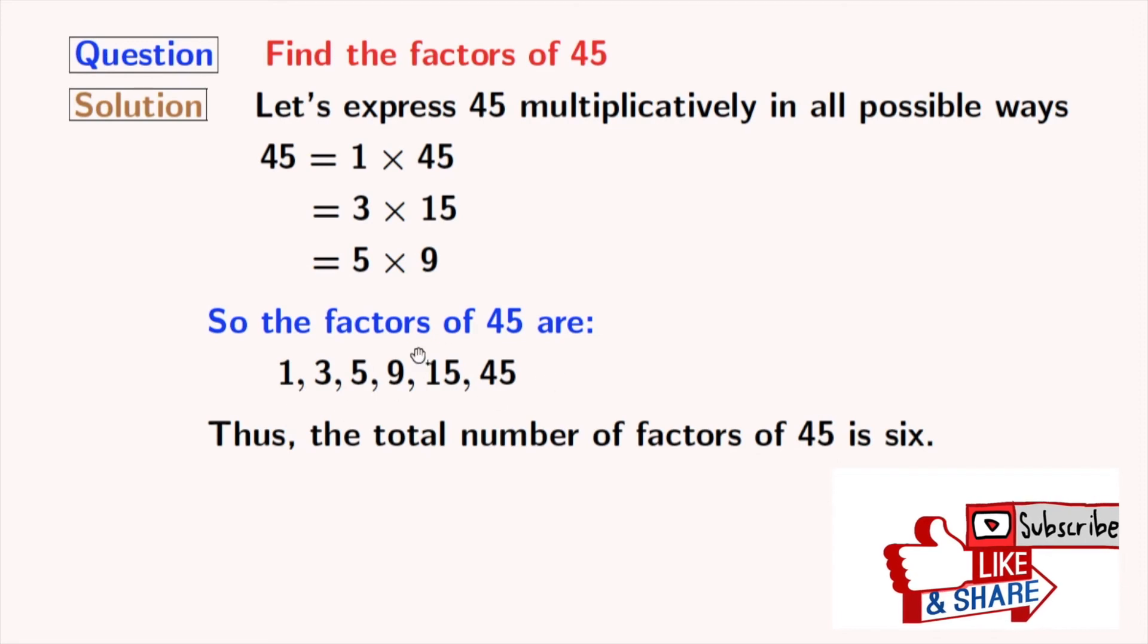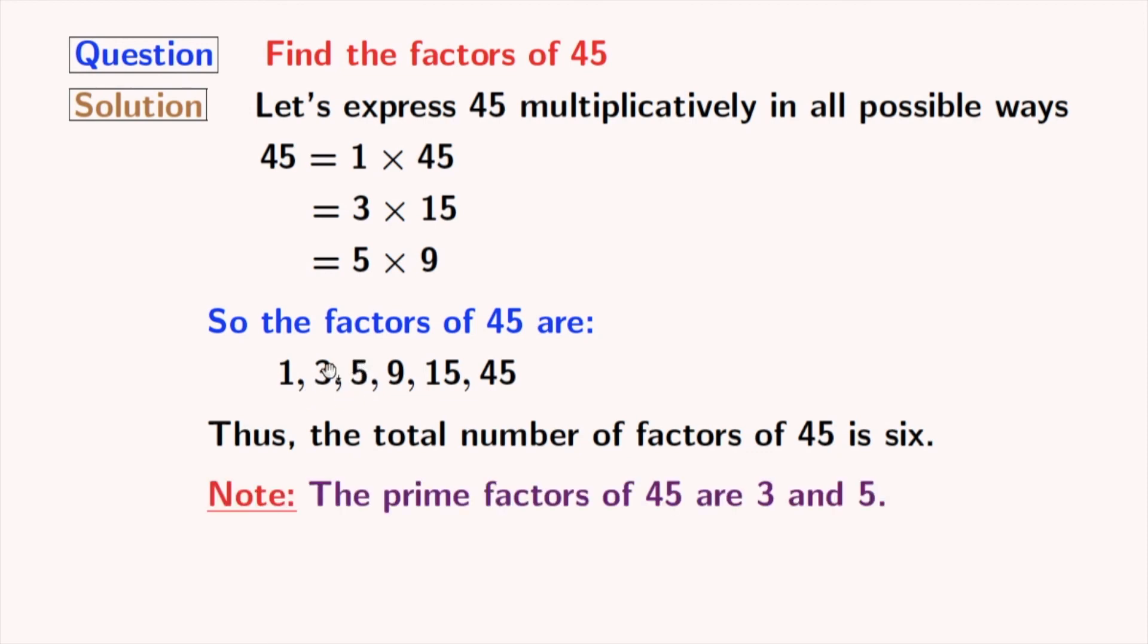Now, if we look at these factors, we can see that 3 and 5 among these numbers are prime numbers, because these two numbers do not have any divisor other than 1 and that number itself. So, the prime factors of 45 are 3 and 5.